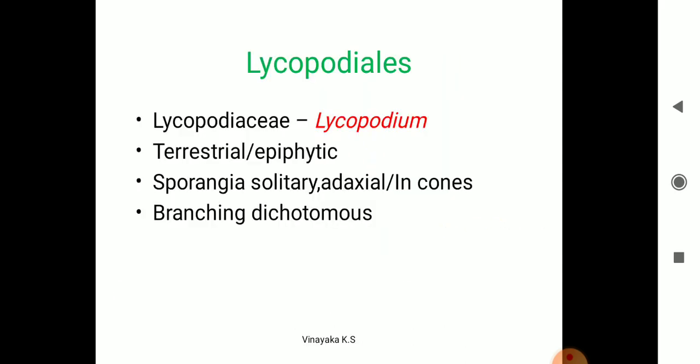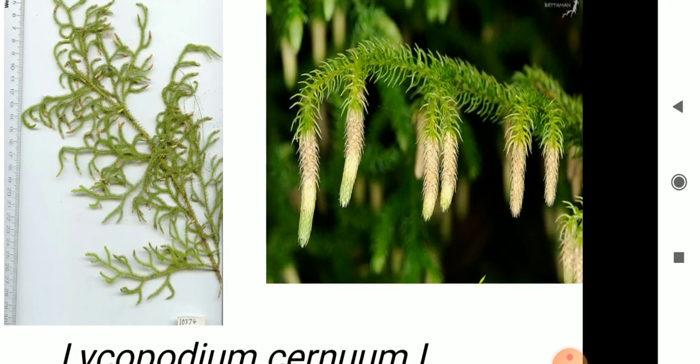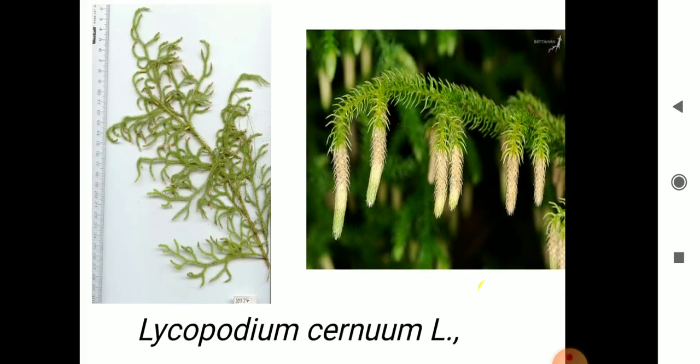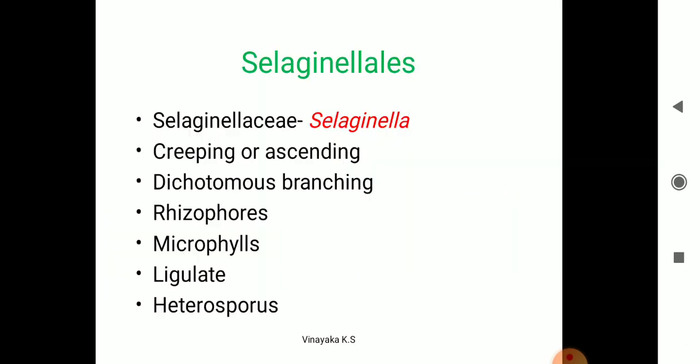The next group is Lycopodales, family Lycopodaceae, example Lycopodium. They may be terrestrial or epiphytic in nature. They bear sporangia solitarily on adaxial surfaces, and branching is dichotomous. The sporophytic structure appears as white spore-bearing structures on the plant.